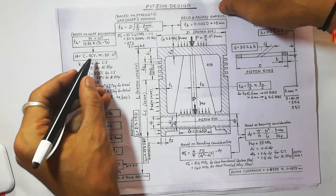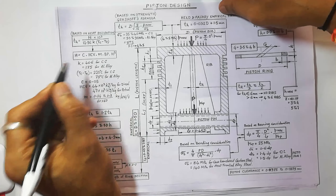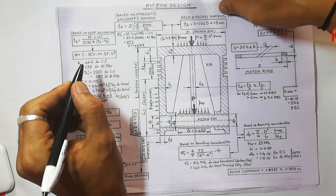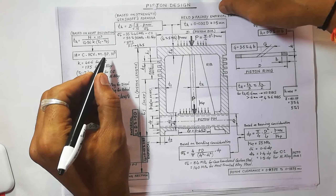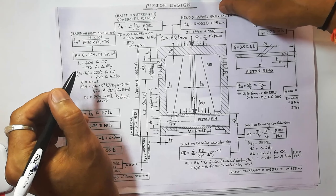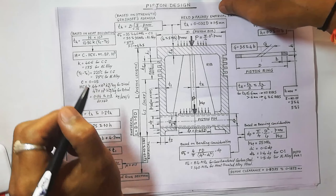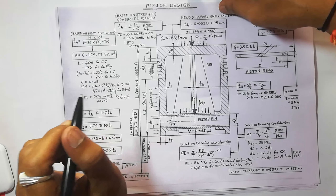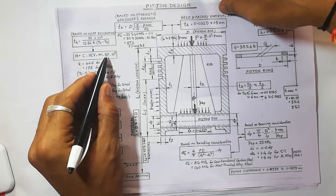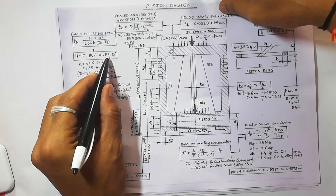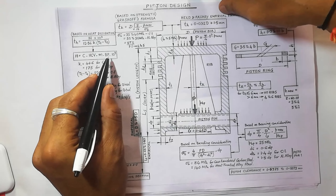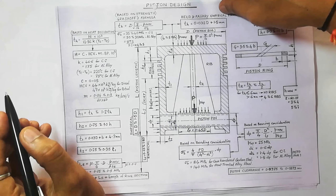M is the mass of the fuel used in kg per brake power second. BP is the brake power of the engine per cylinder.